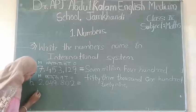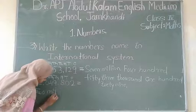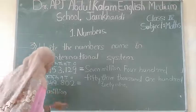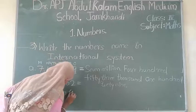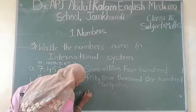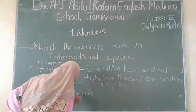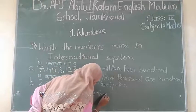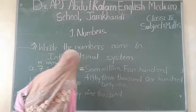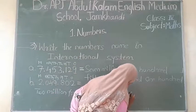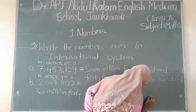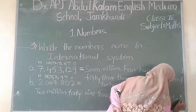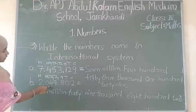So right here: 2 million. In the hundred-thousands place there is no number, so we write 49,000. So right here, 49,802. So students, the number is 2,049,802.